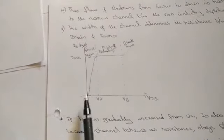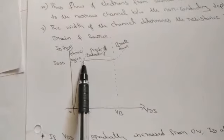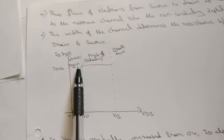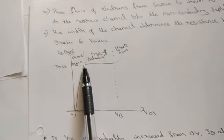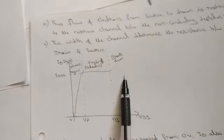Looking at the transfer characteristics: as voltage increases, current also increases until the pinch-off voltage VP. This region is called the ohmic region, where Ohm's law is obeyed — voltage and current increase proportionally. At VP, the current becomes constant; this is the saturation region. Beyond that, breakdown occurs as the reverse voltage increases — this is the breakdown region at voltage VB.